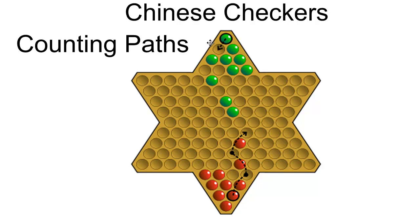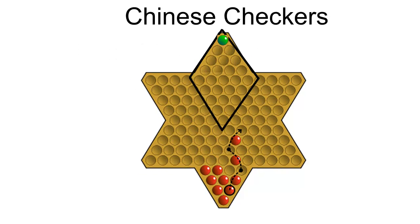Now, in the absence of jumping, basically what can happen — your checker has two options. As you move it forwards towards the other player's home, you can move it to the left or to the right, so there is a binomial or binary set of options.